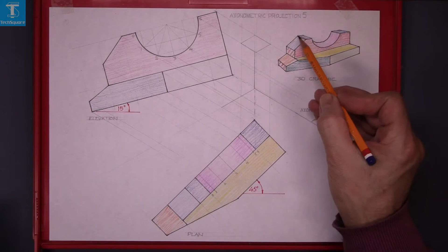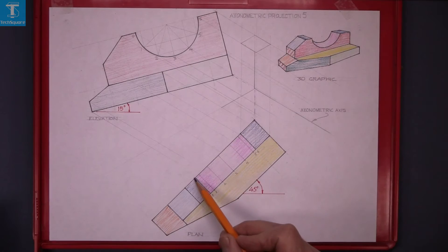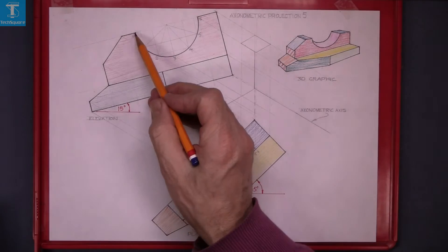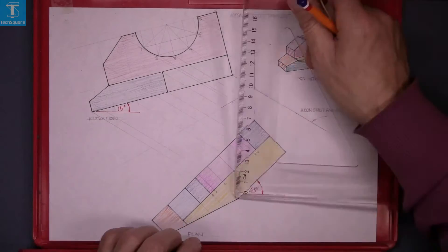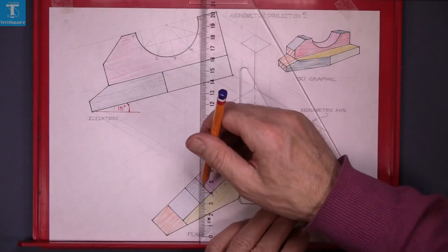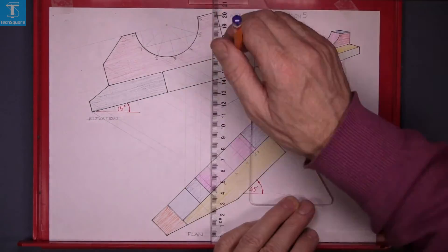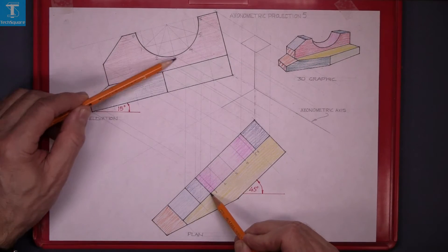Now we're looking for this top of this next piece, this blue piece here and that's it in the elevation. So project those four points up. And now trace the points.